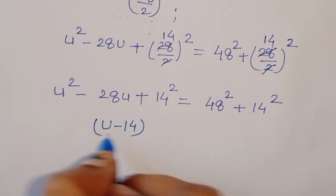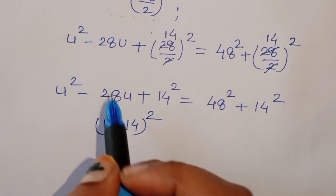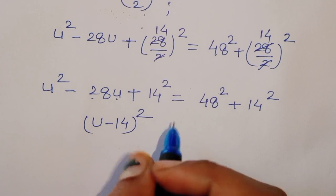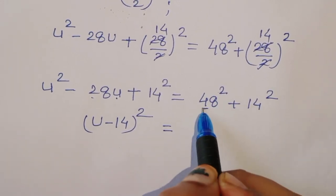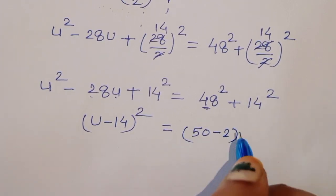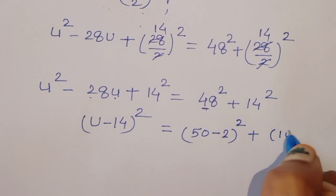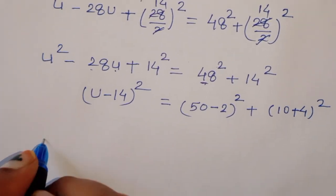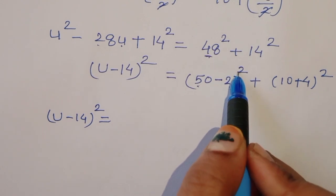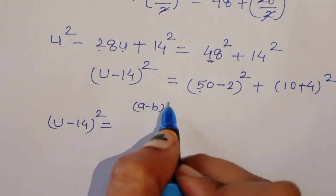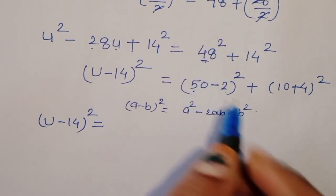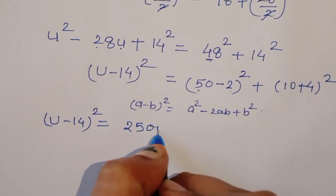We can write the left side as (u - 14)², using the identity a² - 2ab + b² = (a - b)². So (u - 14)² = 48² + 14². Now we evaluate the right side.